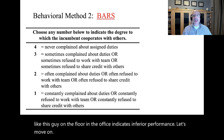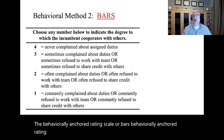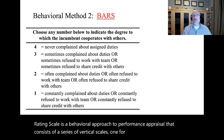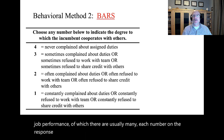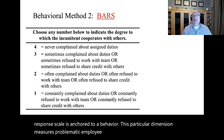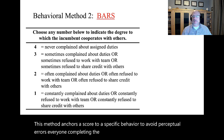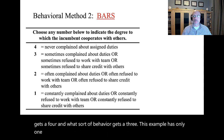The behaviorally anchored rating scale, or BARS, is a behavioral approach to performance appraisal that consists of a series of vertical scales — one for each important dimension of job performance, of which there are usually many. Each number on the response scale is anchored to a behavior. This method anchors a score to a specific behavior to avoid perceptual errors. Everyone completing the BARS knows exactly what sort of behavior gets a 4 and what sort of behavior gets a 3. There are likely many, many more dimensions measured than the one shown in this example.